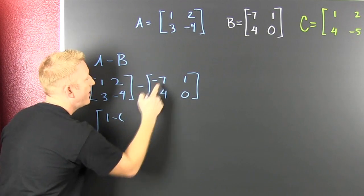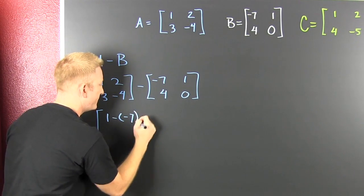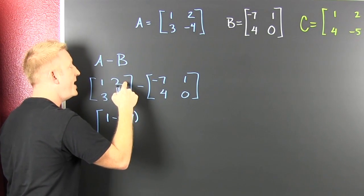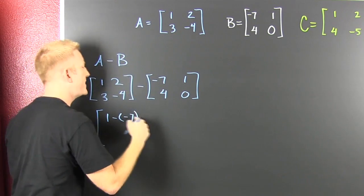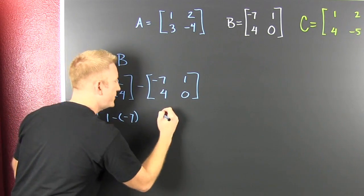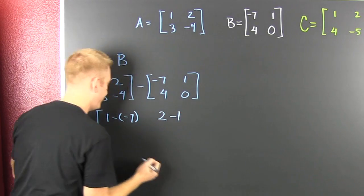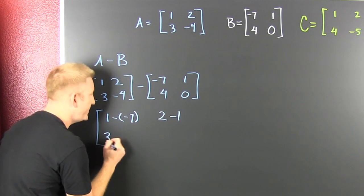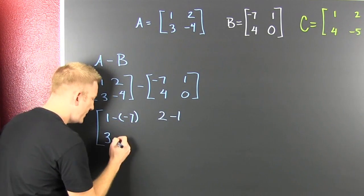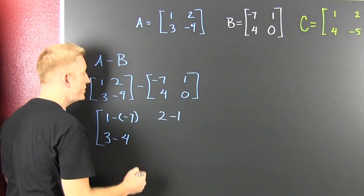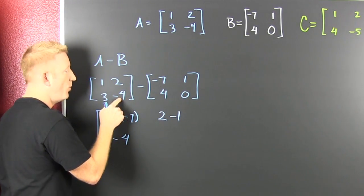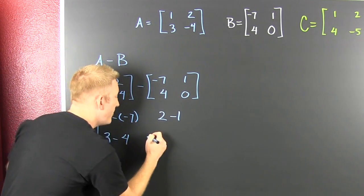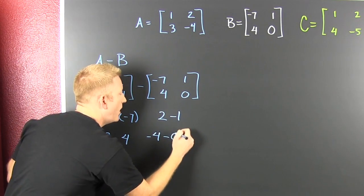So, 1 minus that minus 7. And then, in my first row, second column, I'm going to take that 2 and I'm going to subtract off that 1. And then down here, I take my 3 and I subtract off 4. But wait. There's more. There's that minus 4. Minus 4. Minus.